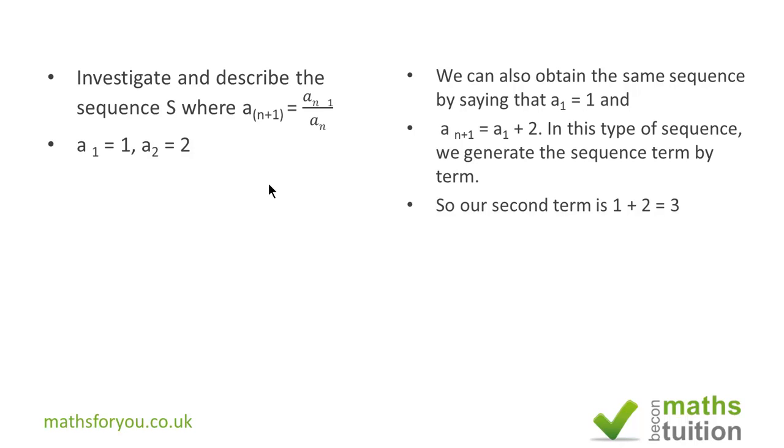So in this type of situation we are generating our sequence term by term. In effect, if a_1 is 1, then a sub n plus 1 becomes 1 plus 2 which is 3. Following from that, our a_n now becomes 3 and a sub n plus 1 becomes 3 plus 2 which is 5.